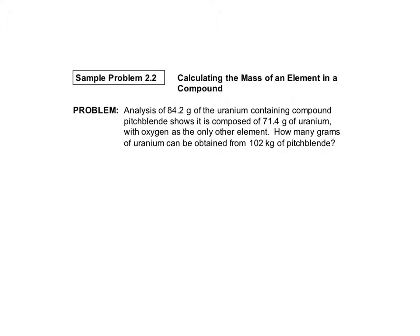Sample problem 2.2 says analysis of 84.2 grams of the uranium-containing compound pitchblende shows it is composed of 71.4 grams of uranium with oxygen as the only other element. How many grams of uranium can be obtained from 102 kilograms of pitchblende?